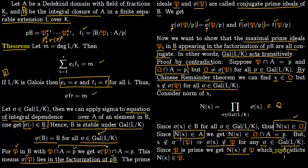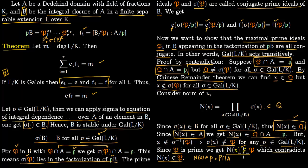But this contradicts what we established: norm(x) lies in the small p, and since capital P lies in the factorization of p, we have p ⊆ P, so norm(x) should lie in capital P. We have norm(x) not in P and norm(x) in P — a contradiction. Therefore it must be the case that all prime ideals appearing in the factorization of p are conjugates of each other, which gives us the result that eᵢ = e and fᵢ = f for all i.